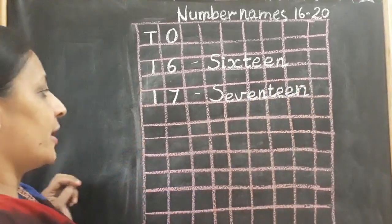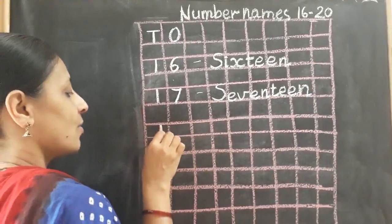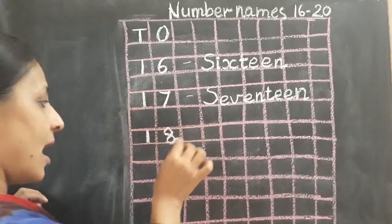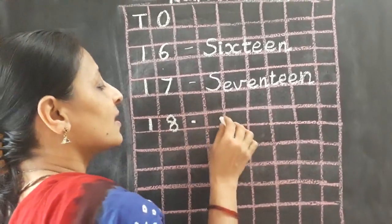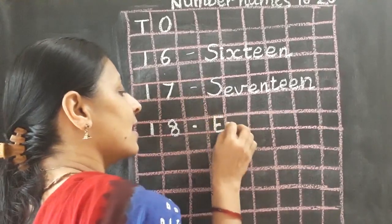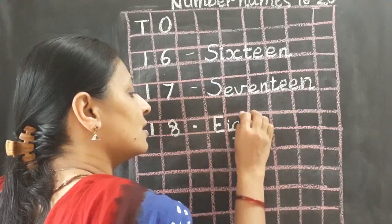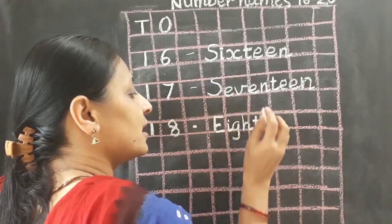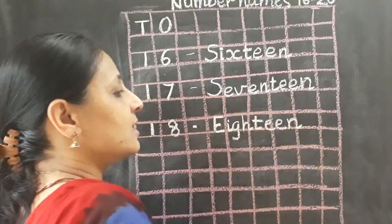Now children, after writing 17, again I will leave one box and write 18. Now we will write the number name of 18. The spelling of 18 is E, I, G, H, T, E, E, N. Eighteen.